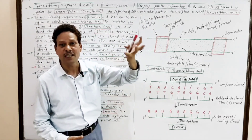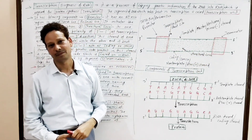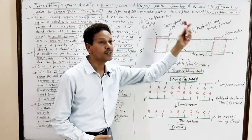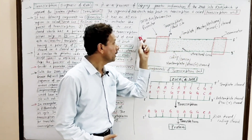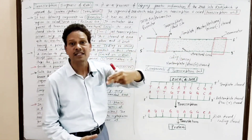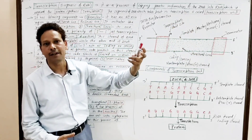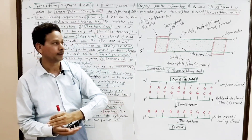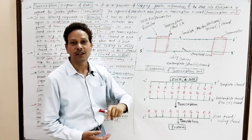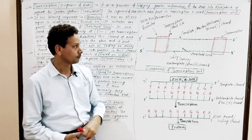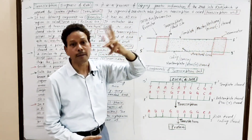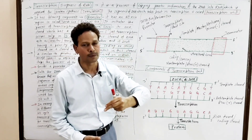The promoter site initiates the process of transcription. The next component is the structural gene. In this structural gene, because DNA is double-stranded, one strand having a polarity of 3' to 5' acts as the template strand or master strand, which is involved in the formation of mRNA. The strand that doesn't involve in transcription is named the non-template or coding strand. The third component is the terminator site, which stops the process of transcription.